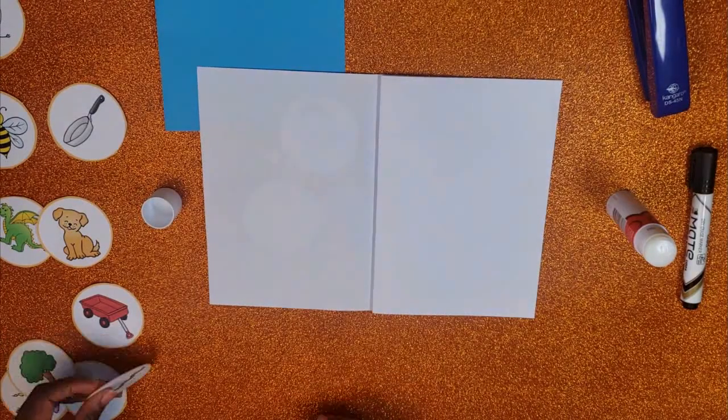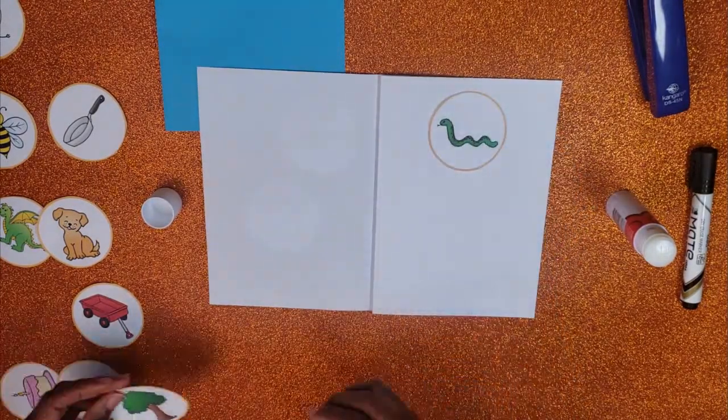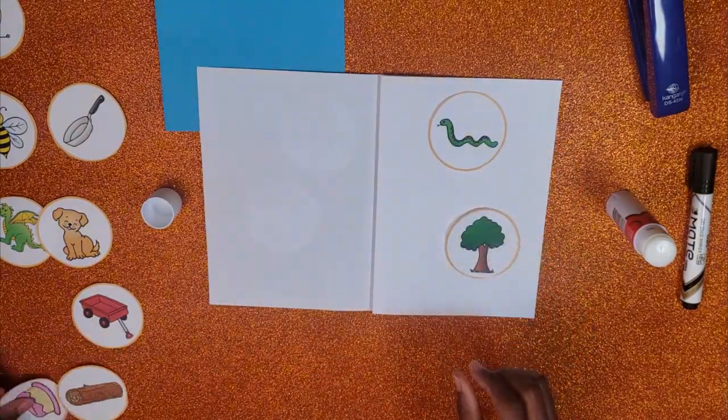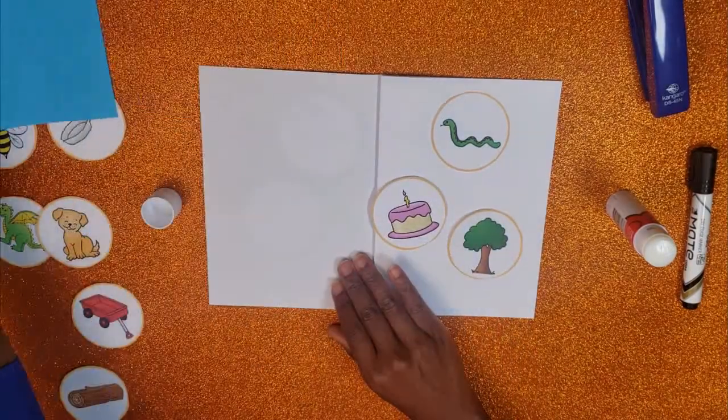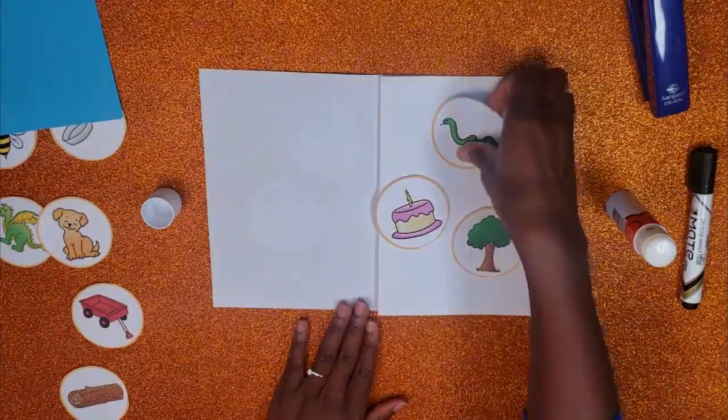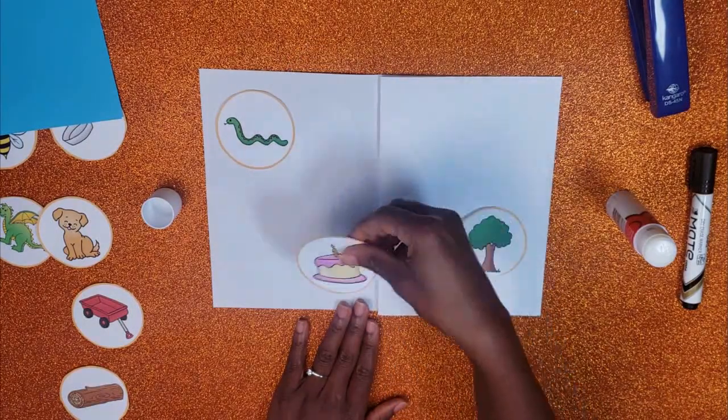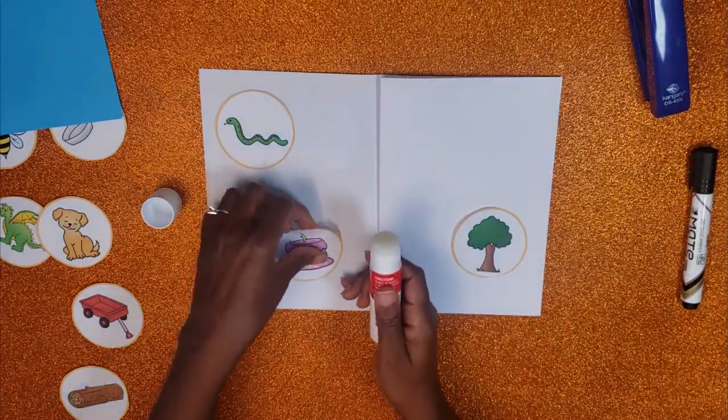Now, for very young children, I highly recommend you just stick with the pictures and do not add words. This allows them to focus purely on their phonemic awareness skills, the sounds they hear, and how we play with them.